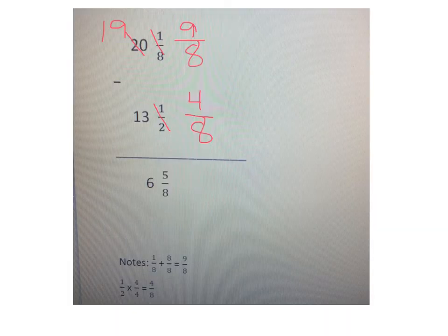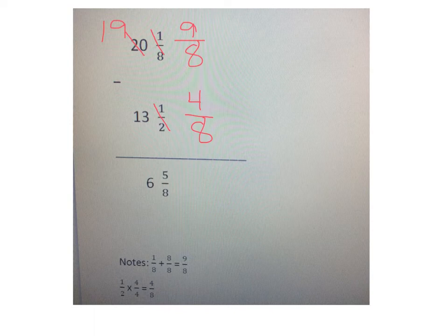Here are my notes, 20 and 1 eighths minus 13 and a half. In my notes at the bottom, first I convert a half to an eighth, and I show that in a different video, but kind of quickly, 1 half is the same as 4 eighths. So I cross out the half and 13 and a half and make that 4 eighths.